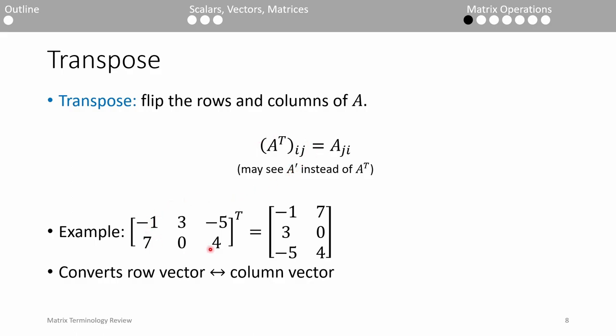If we were to transpose this matrix here, we would take each row and make it its own column. Note that this flips the dimensions of the vector or matrix. In the example we have here, this matrix is 2 by 3, but the transpose matrix becomes 3 by 2. Obviously, transposing a scalar doesn't do anything because it's 1 by 1.